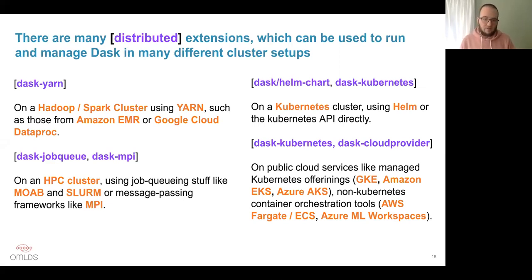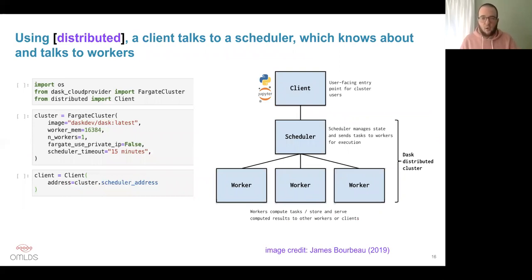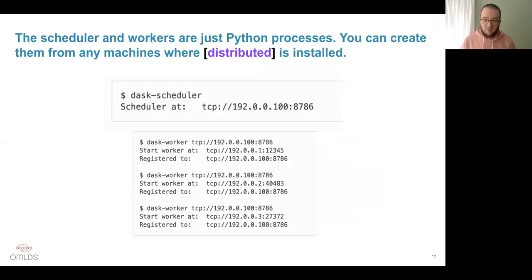You can also use the Dask Cloud Provider package, which has basically all the non-Kubernetes ways to run Dask on a public cloud provider — AWS ECS, Azure ML workspaces, DigitalOcean Docker droplets, or just regular virtual machines. What you'll see in the demo is that this separation means your code doesn't have to change if you swap in a different type of scheduler. As long as the scheduler is a distributed-compliant scheduler, your code doesn't need to change if you switch from a local cluster on your laptop to Amazon ECS, or then to Azure ML workspaces. Just that little bit describing how to set up the cluster needs to change.